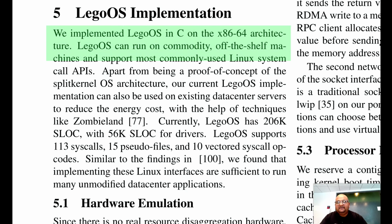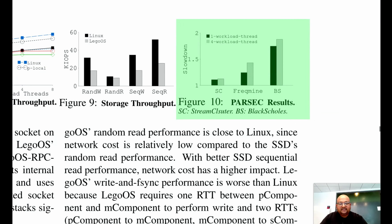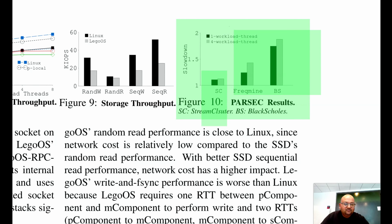The authors implemented Lego OS in C on the x86-64 architecture; it can run on most commodity hardware and supports a substantial subset of commonly used Linux system calls. One benchmark was the Parsec suite, which includes common cluster workloads, run with one processor and an X cache size of 128 megabytes. Stream cluster was the best performing benchmark because it accesses memory in a batched fashion and each batch is small enough to fit inside the X cache. Other benchmarks had much larger working sets that did not fit within the X cache and hence needed to go out to the network to fetch memory very often.